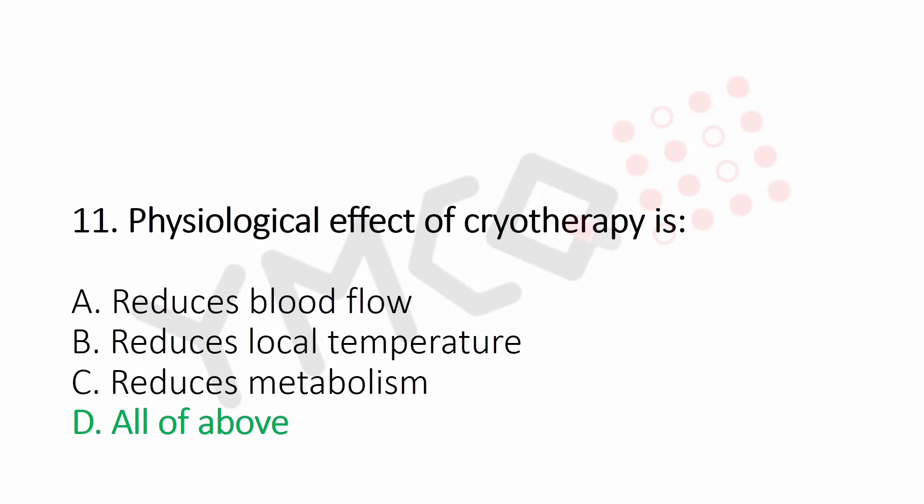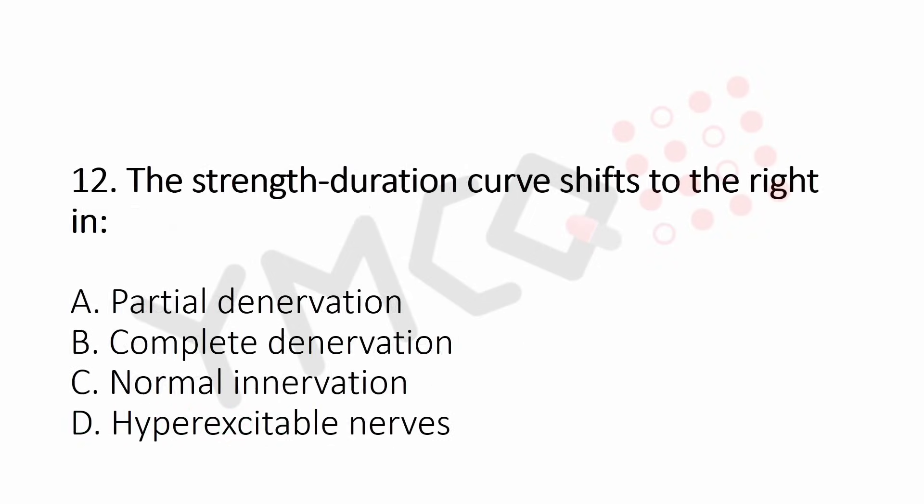Question 12: The strength-duration curve shifts to the right in — Option A: partial de-innervation, Option B: complete de-innervation, Option C: normal innervation, Option D: hyper-excitable nerves. The answer is Option B: complete de-innervation.